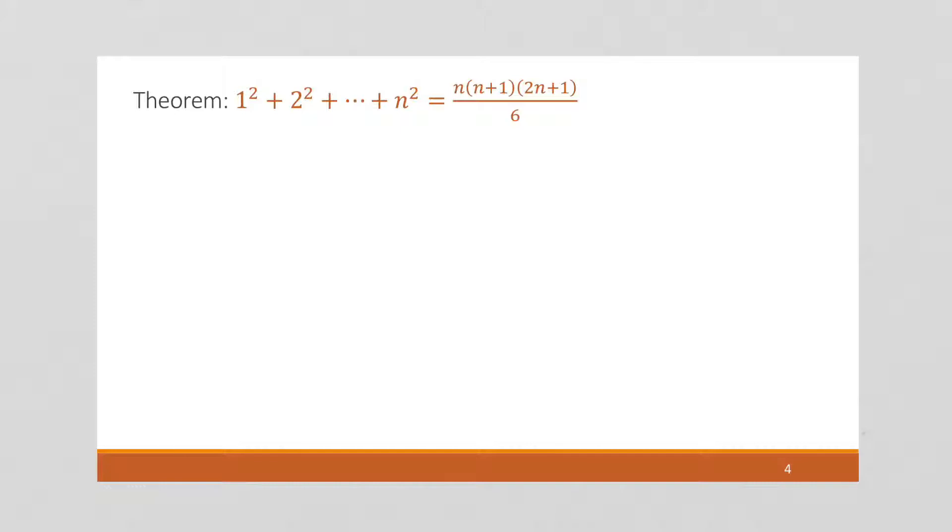First of all, as usual, I'm going to rewrite this theorem in summation notation. So this part right here, we can rewrite as the sum of i equals 1 to n of i squared. And so we can rewrite our theorem and say this summation equals n times (n plus 1) times (2n plus 1) over 6.